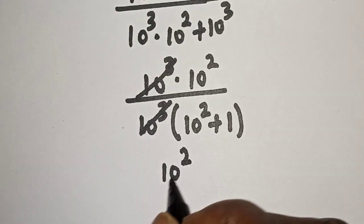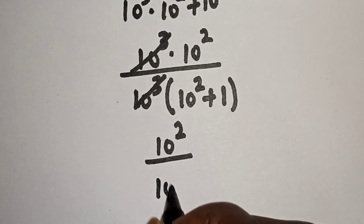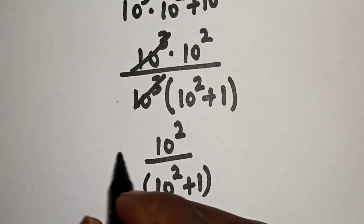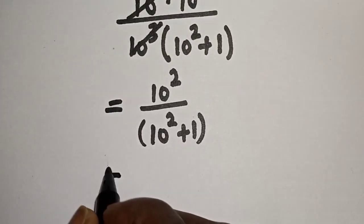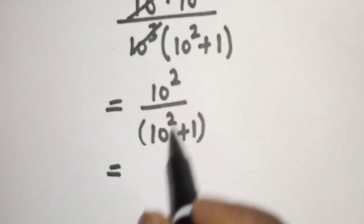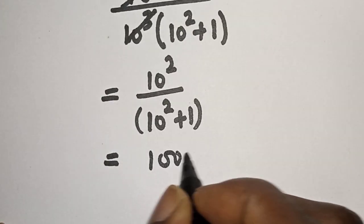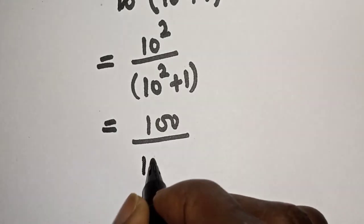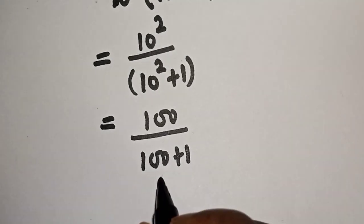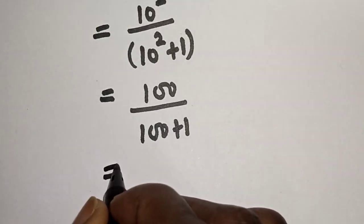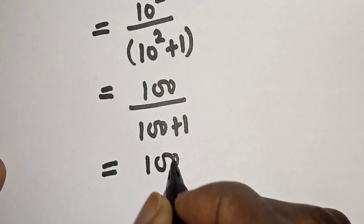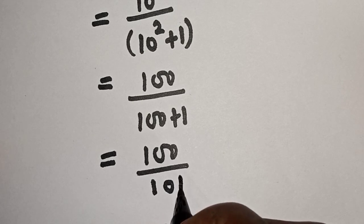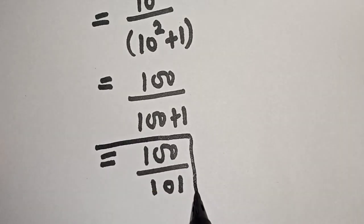10 raised to power 3 divided by 10 raised to power 3, divided by 10 raised to power 2 plus 1. This is equal to 100 over 100 plus 1, which is 100 over 101. This is the final answer.